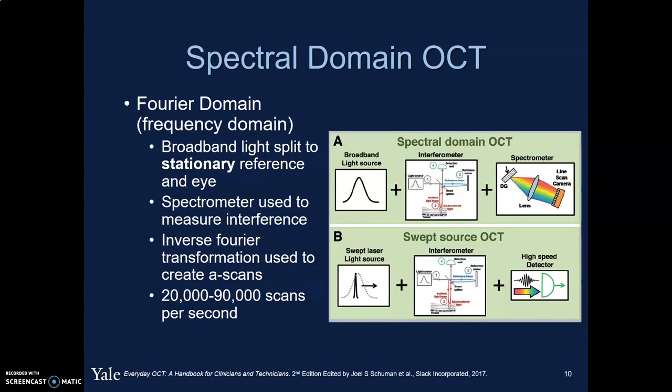The next generation was spectral domain OCT — a frequency-based OCT. It uses a broadband light source, but it's now split to a stationary reference arm as well as the eye. Instead of a mobile reference arm, it uses a spectrometer to generate interferences and an inverse Fourier transformation to create the various A-scans that are put together to generate the pictures we see. Because it's no longer dependent on a mobile reference arm, it can do 20,000 to 90,000 scans per second.